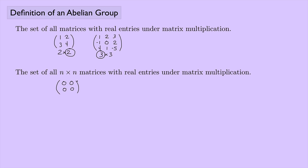Before inverses, what would the identity be? For 2×2 matrices, the identity matrix has 1s along the diagonal and 0s everywhere else — same holds for 3×3, 4×4, and so on. Now, what matrix could I multiply the all-zeros matrix by to get the identity? There's nothing — no matrix will work. So we need inverses, and a matrix has an inverse only if its determinant is non-zero.